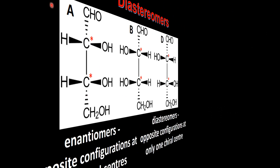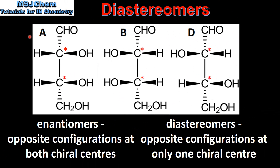So to summarize: A and B are enantiomers, as they have opposite configurations at both chiral centers and are mirror images of each other. B and D are diastereomers, as they have opposite configurations at only one chiral center and are not mirror images of each other.